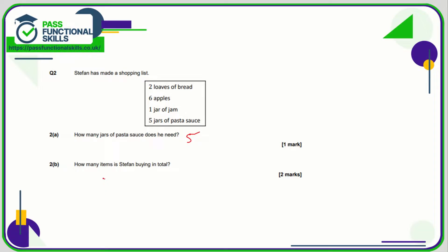How many items is he buying in total? Well, it's 5 pasta sauces, 1 jam, 6 apples, and 2 loaves. And if you add those together, again, if you want to use a calculator you can, but that comes to 14 items.